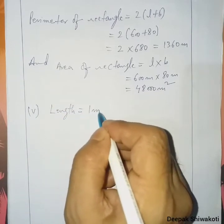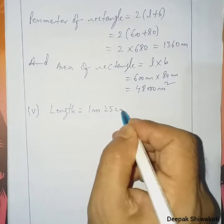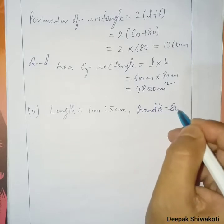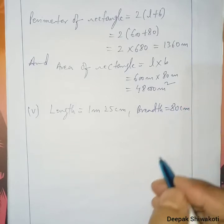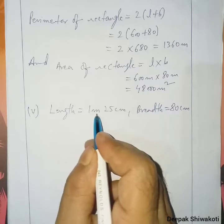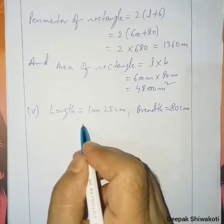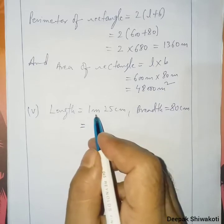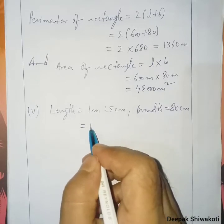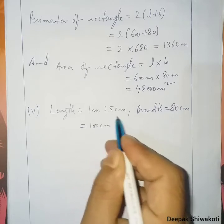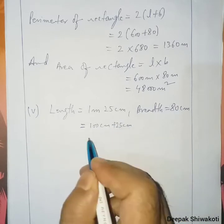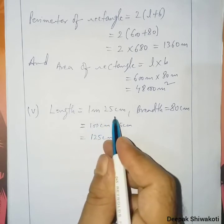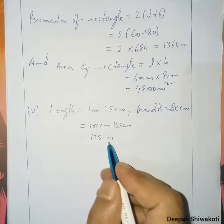Number 5: length is equal to 1 meter 25 centimeter, breadth is equal to 80 centimeter. Here, meter and centimeter are two different units in the length, so we will convert to centimeter. 1 meter equals 100 centimeter, plus 25 centimeter, so 1 meter 25 centimeter equals 125 centimeter.